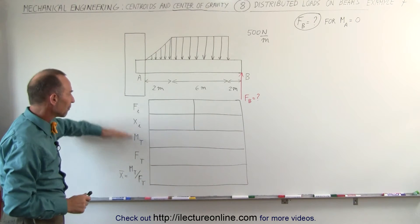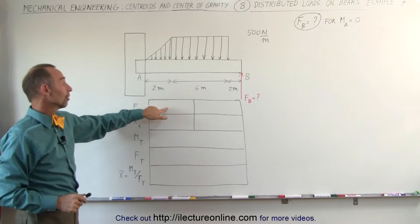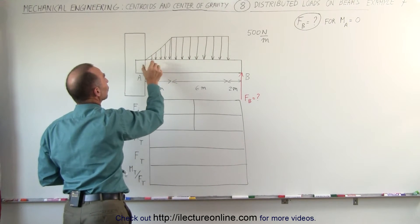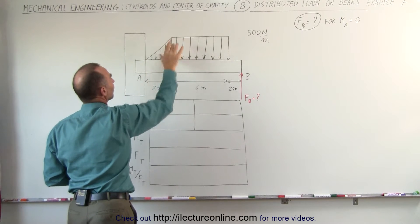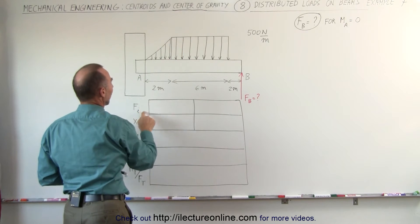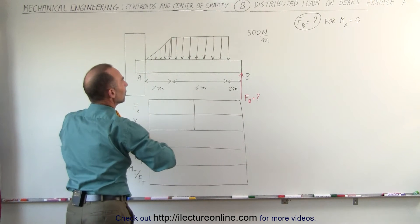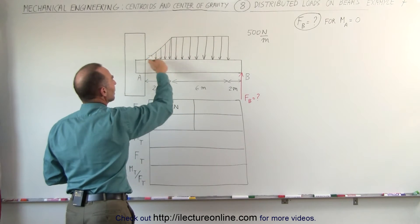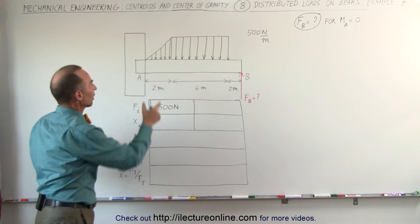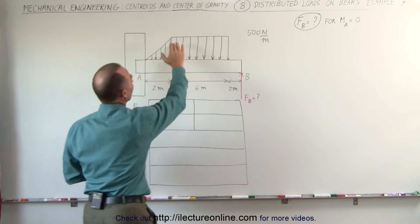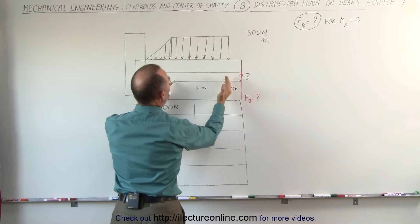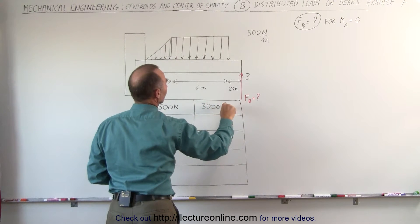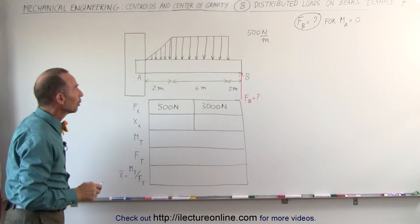Again, we have our table, 5 rows. The first row represents the force of each segment. The first segment is a triangular segment. The area is one-half the base times the height. The base is 2 meters, one-half times the base is 1. The height is 500 N per meter, so we get 500 N for the load, the first segment right here. The second segment is 500 N per meter for a distance of 6 meters. 6 times 500 is 3,000 N. That gives us the total load of each of the load segments.